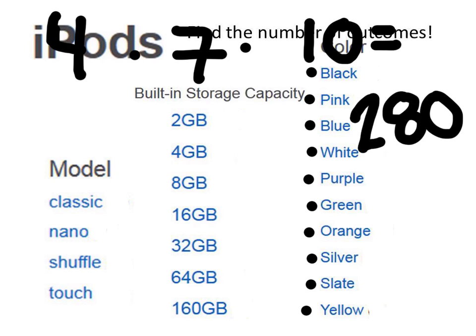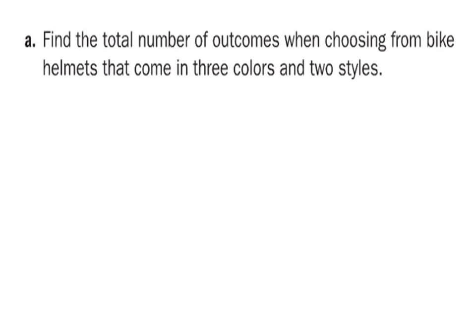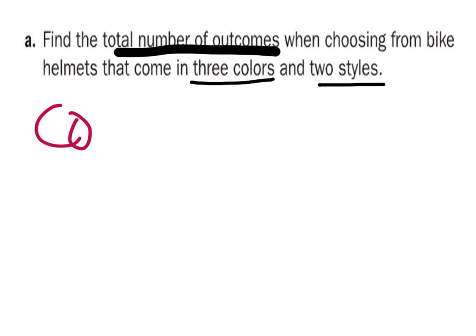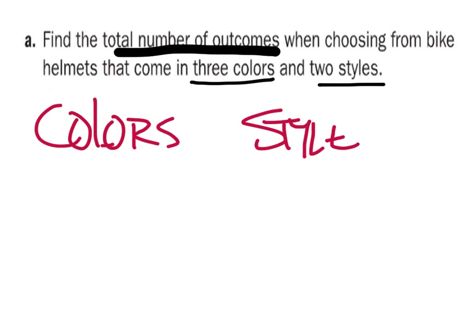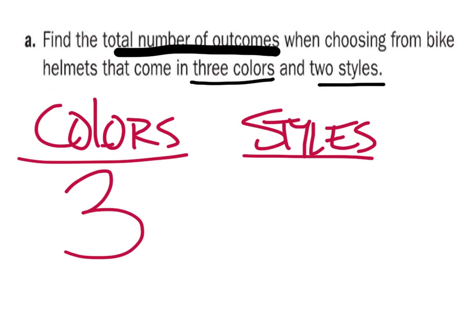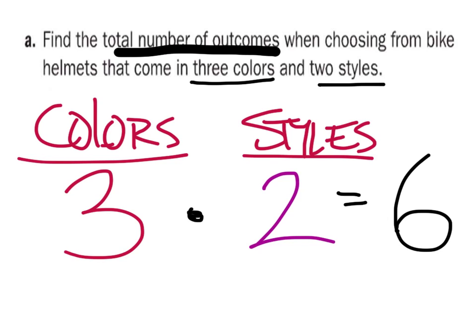So once again, here we're just finding the number of outcomes when choosing a helmet that comes in three colors and two styles. First we've got colors, then we have styles. How many colors are there? Three. How many styles are there? Two. So let's go ahead and multiply these together — how many different bike helmets do you have to choose from? Six. Six different types of bike helmets.